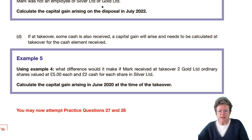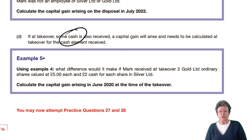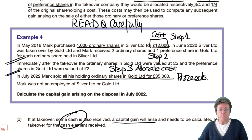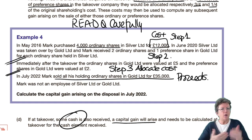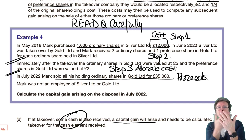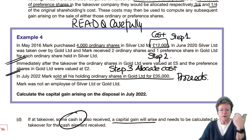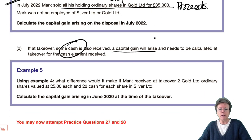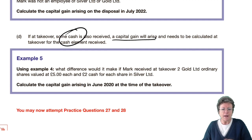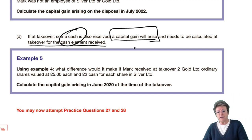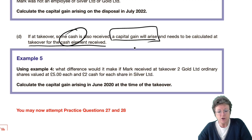Now I'm going to throw a spanner in the works. Sometimes if cash is received, then a gain arises. All of the examples we've looked at so far have been paper-for-paper — Silver to Gold ordinary and preference shares. But we've only had paper for paper, so no capital gains. All we've done is allocate the cost for future capital gains. But if you have cash, you need to work out the cash element because there will be a capital gains computation that needs to be dealt with.